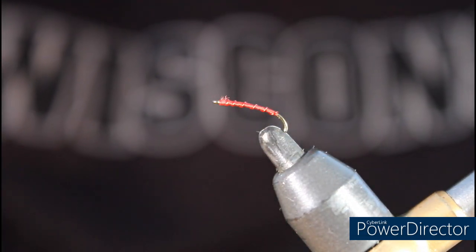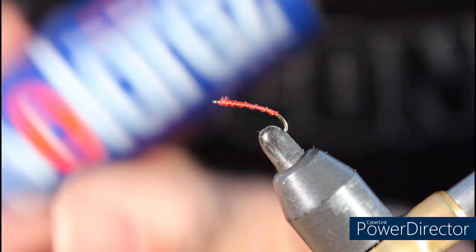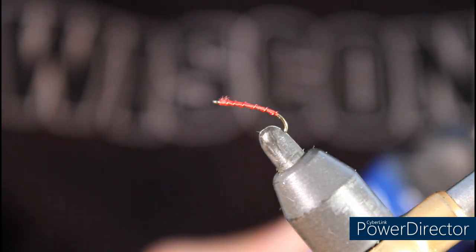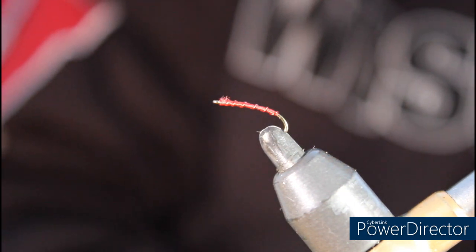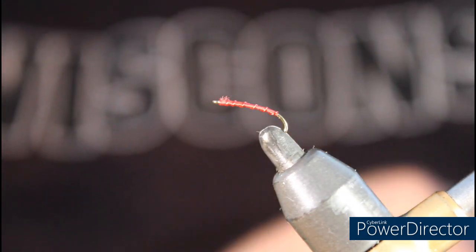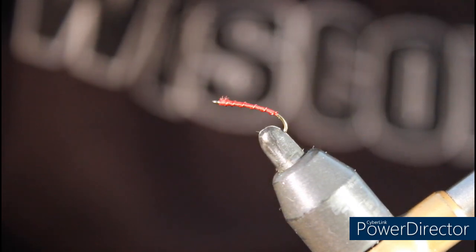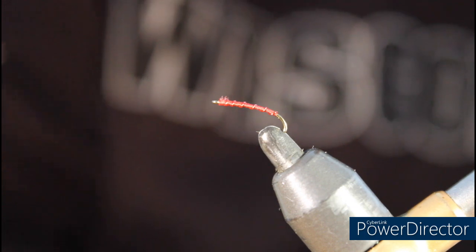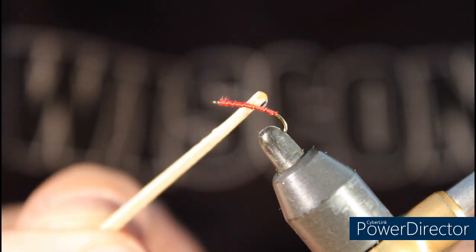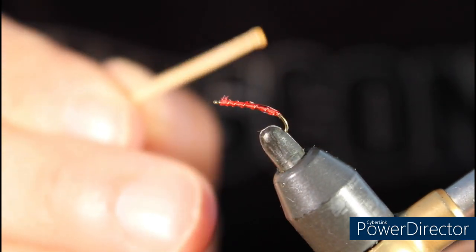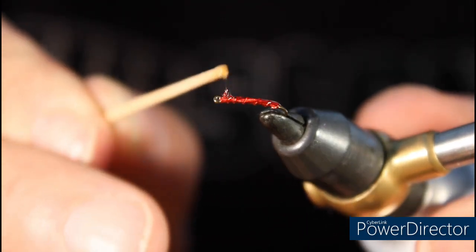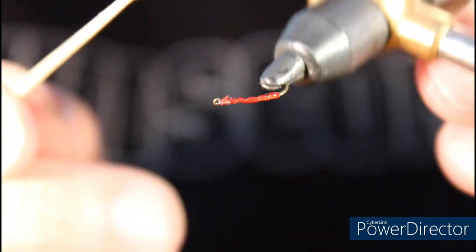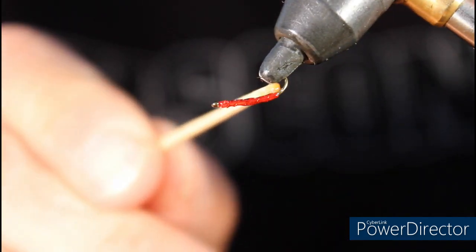To finish this fly we're going to use some SolarRes. What I do is put a little dab onto a piece of paper, then I take a toothpick and dab it in the SolarRes. I'm going to paint this fly all the way around, making sure I cover all the pieces.